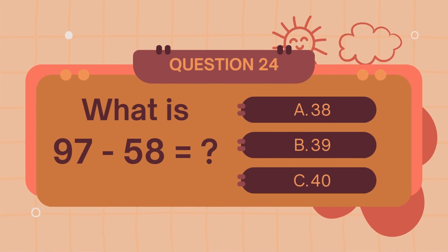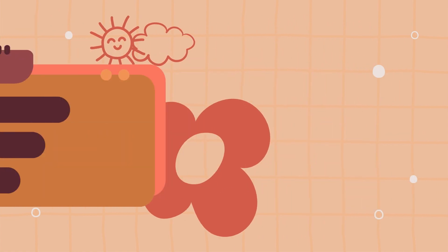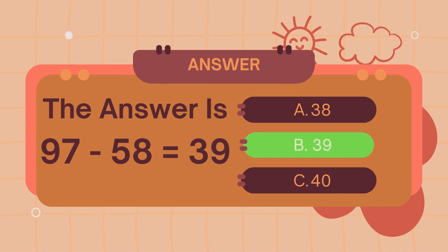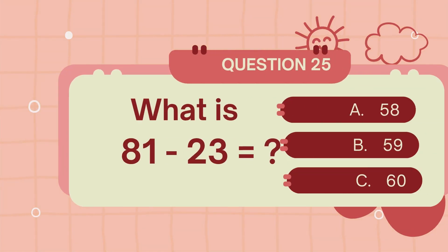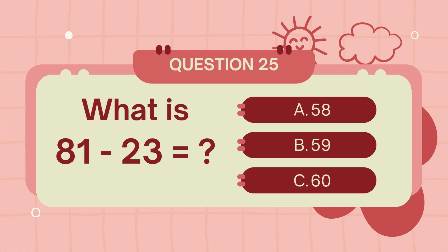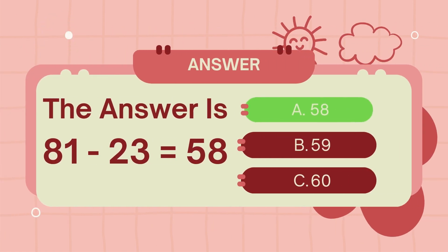What is ninety-seven minus fifty-eight? The answer is thirty-nine. What is eighty-one minus twenty-three? The answer is fifty-eight.